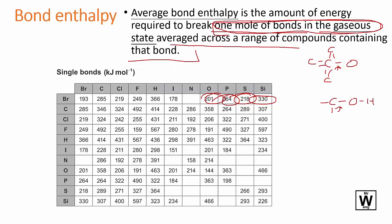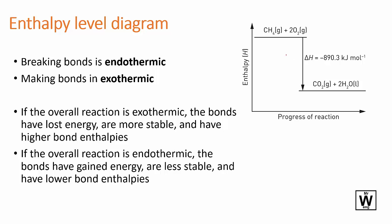Average bond enthalpy is the amount of energy required to break one mole of bonds in the gaseous state averaged across a range of compounds containing that bond. This is another version of an enthalpy diagram where the reactants are written out, the products are written out, and the actual value of enthalpy is given. Because this is energy released from the chemical bonds into heat energy into the surroundings, it's negative and it's exothermic.